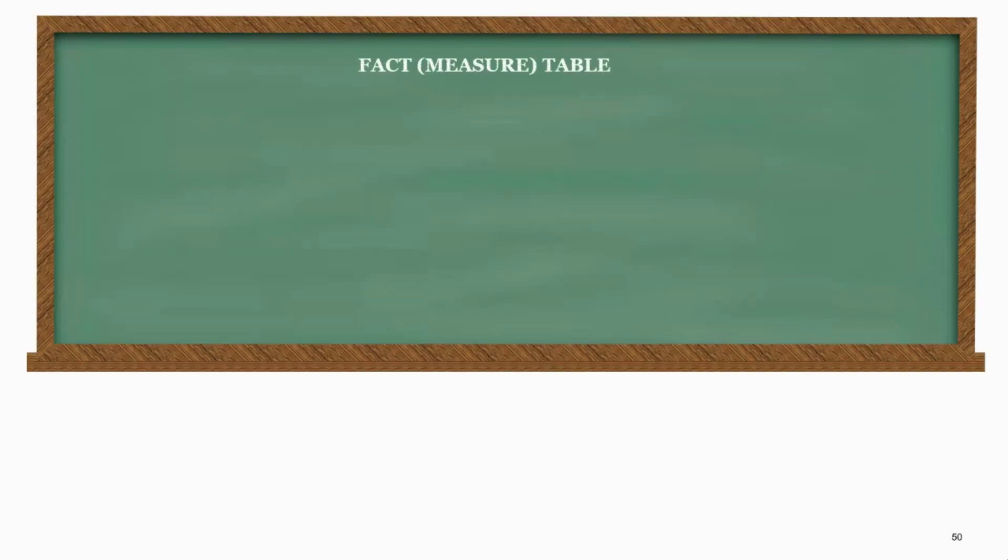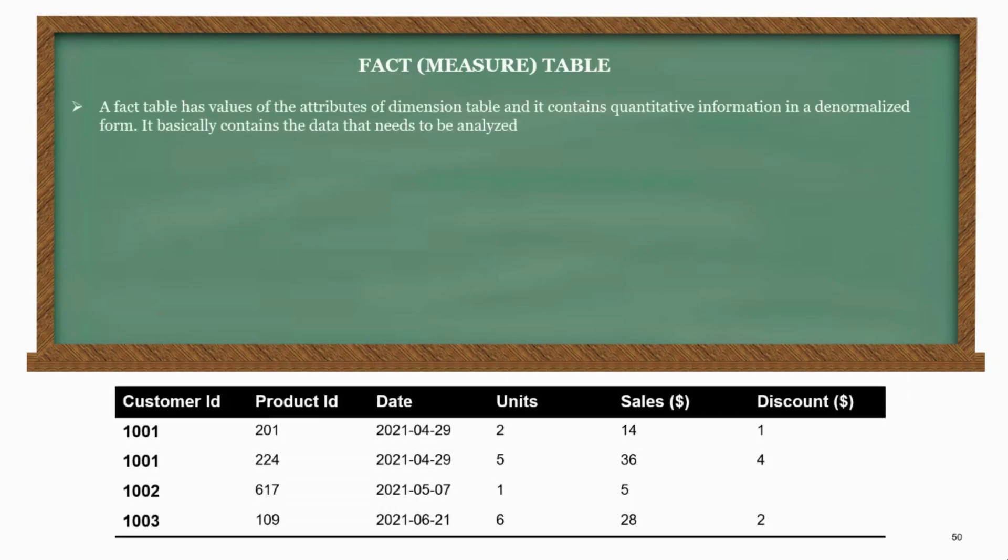Now let's talk about fact or measure tables. A fact table has values of the attributes of dimension table and it contains quantitative information in a denormalized form. It basically contains the data that needs to be analyzed.